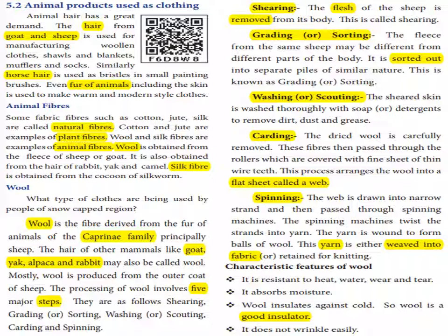What type of cloths are used by people of snowcap regions? Wool is a fiber derived from the fur of animals of the Caprine family, principally sheep. The hair of other mammals like goat, yak, alpaca, and rabbit may also be called wool.